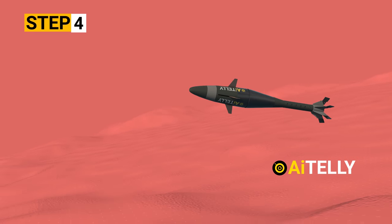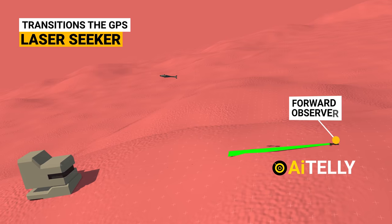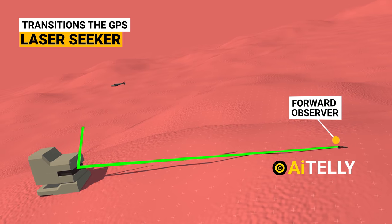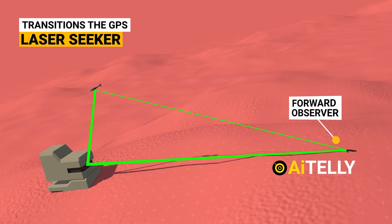Step 4: The Iron Sting missile transitions from the GPS guidance system and synchronizes its laser seeker with the forward observer's ground target.